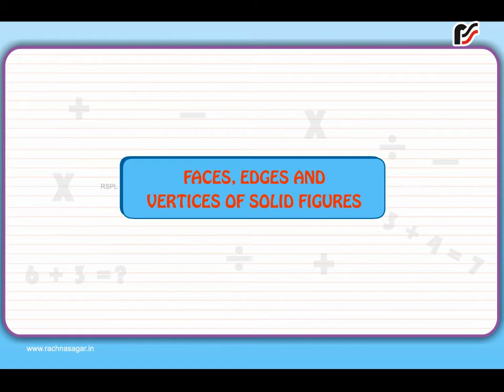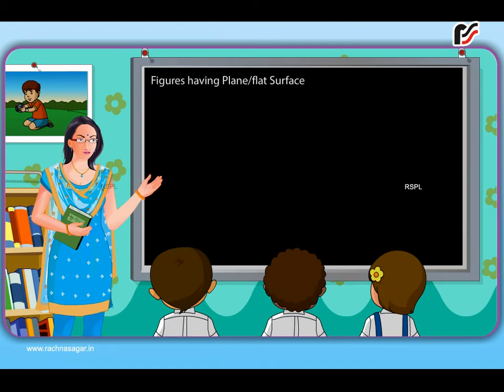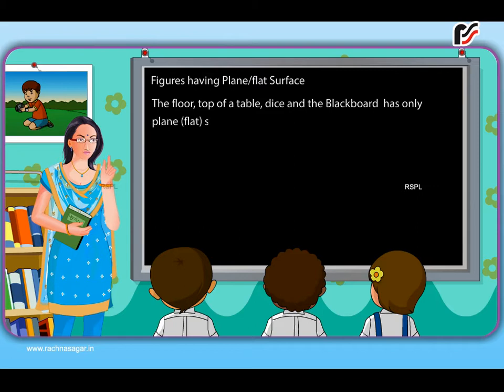Faces, edges and vertices of solid figures. Figures having plain or flat surface. The floor, top of a table, dice and the blackboard has only plain flat surfaces.